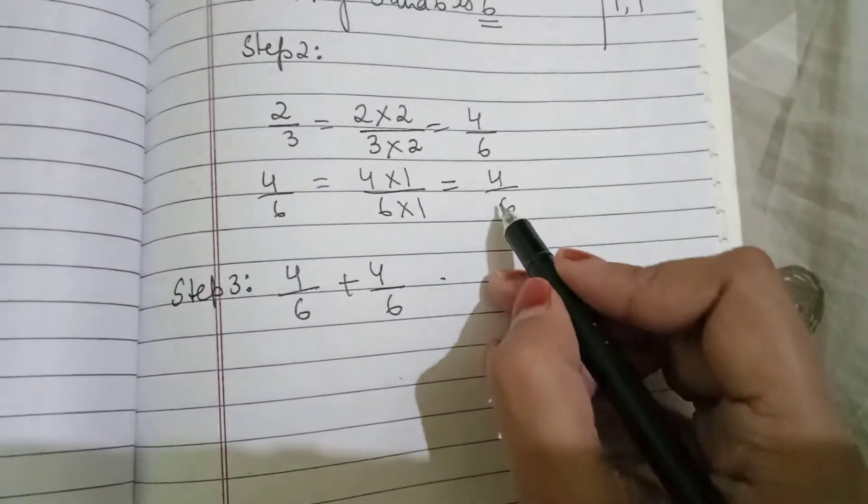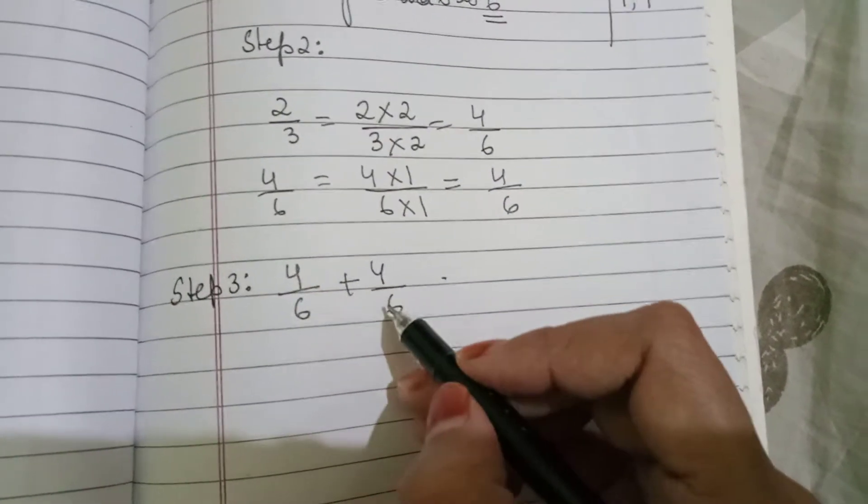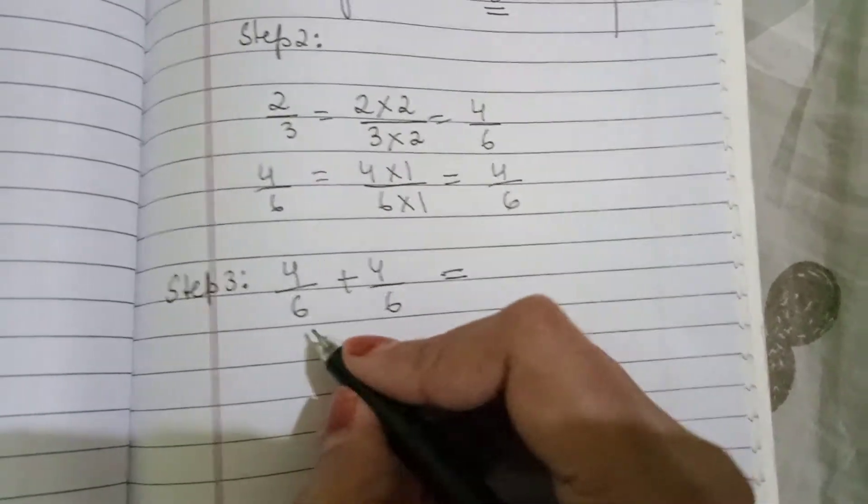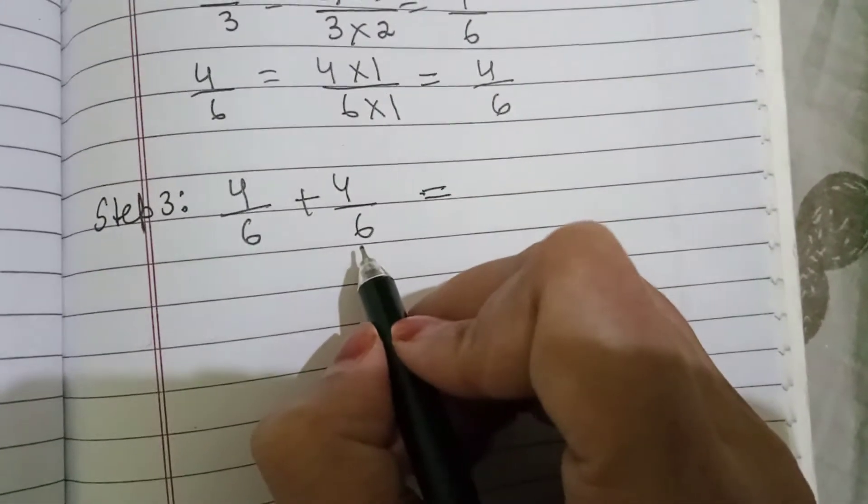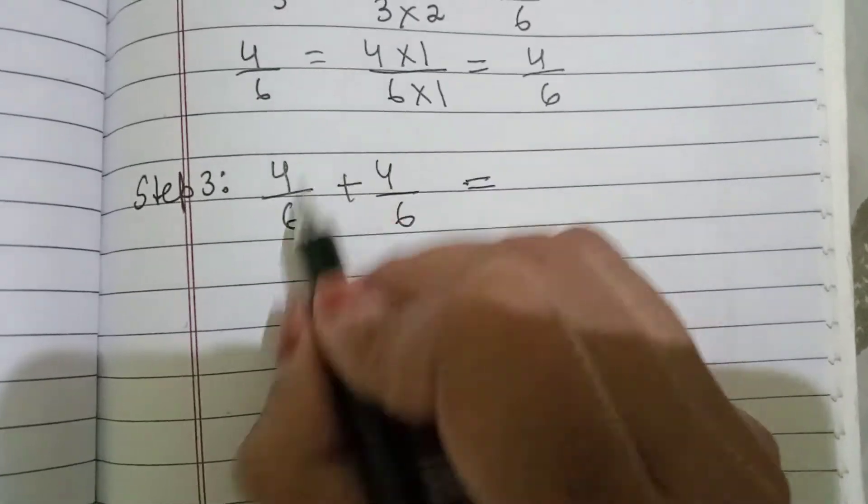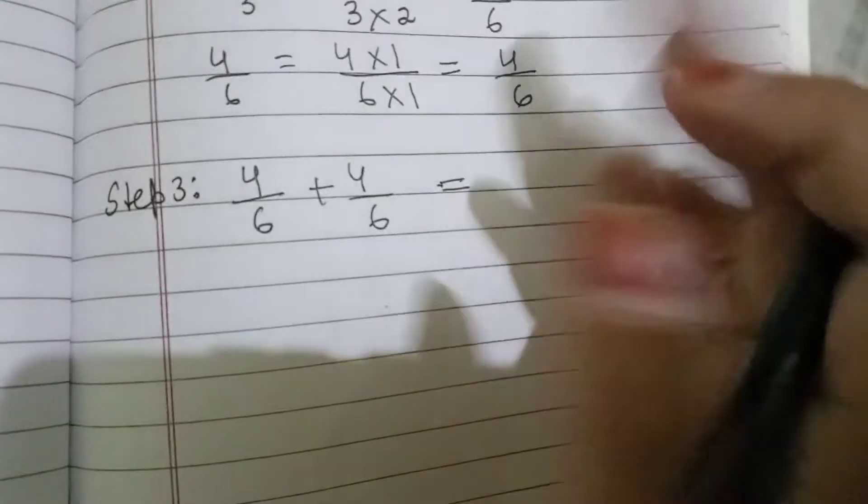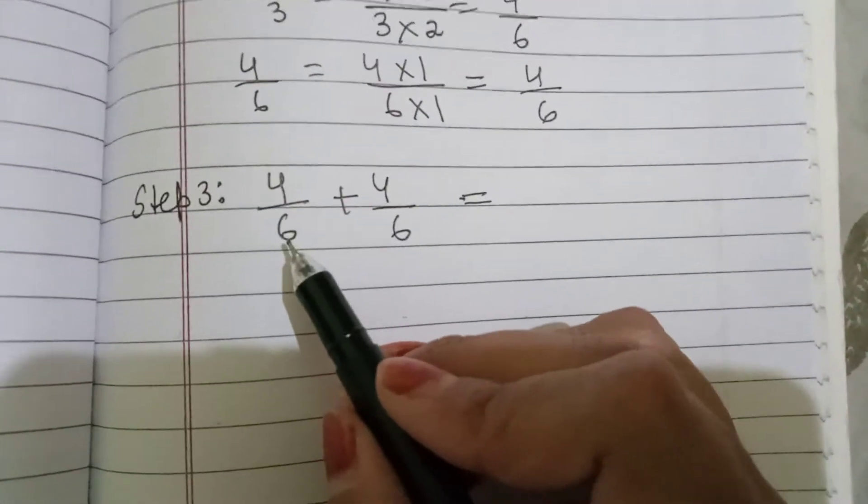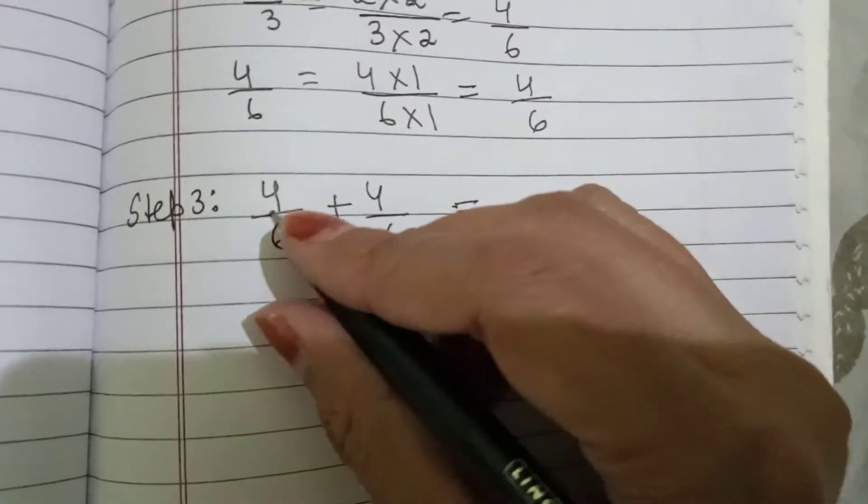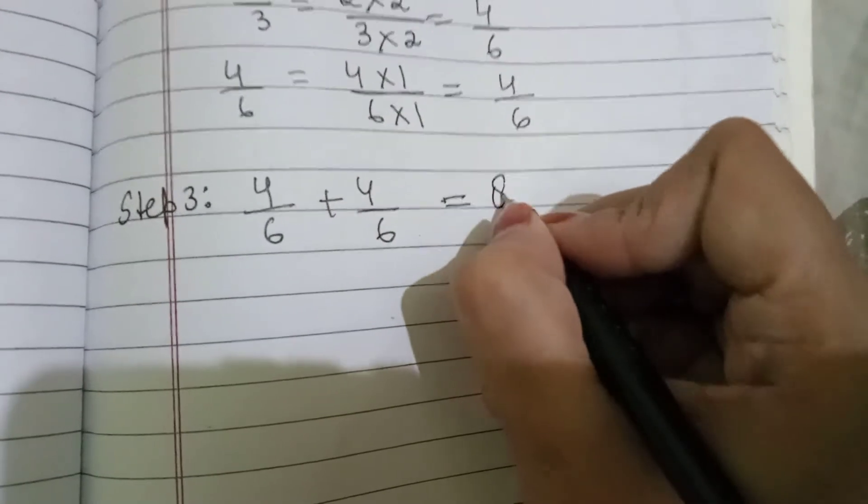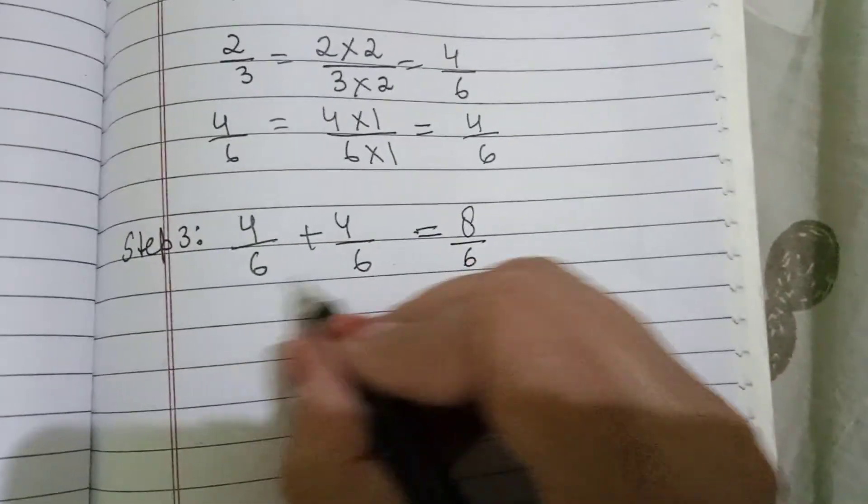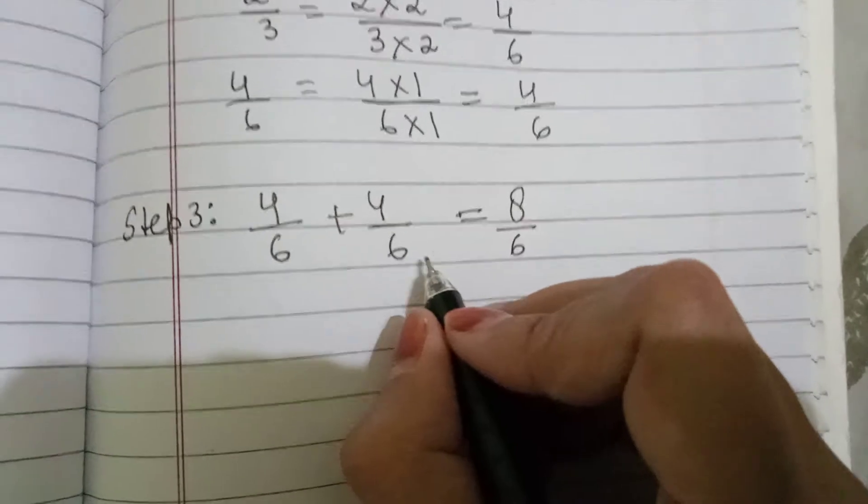This is step number 3. We will put down both the answers, 4 by 6 plus 4 by 6. Now, we have the denominator same, that means this is now like fractions. This is just a coincidence that the numerator is also same, but we have to make sure that the denominators are same.